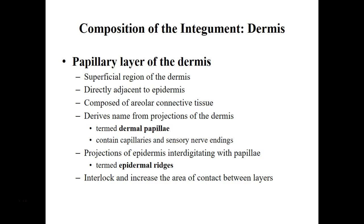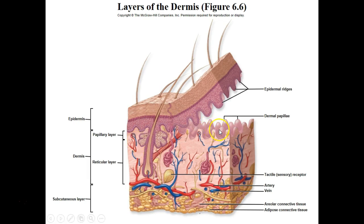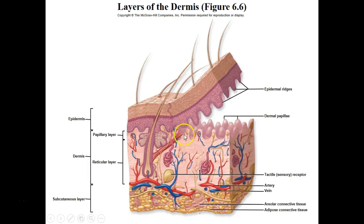The papillary layer is composed of areolar connective tissue and makes up the basement membrane. It helps in producing the dermal papillae — this is what produces epidermal ridges, which gives us our fingerprints. Within the papillary region we have blood vessels and nerve endings. These nerve endings identify different characteristics like deep pressure, pain, and temperature changes.